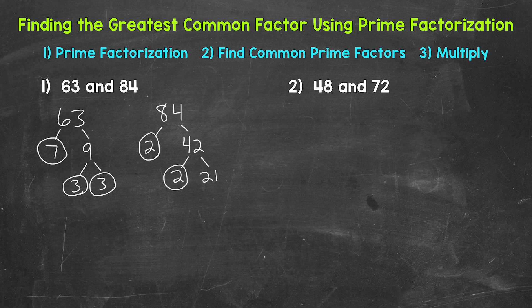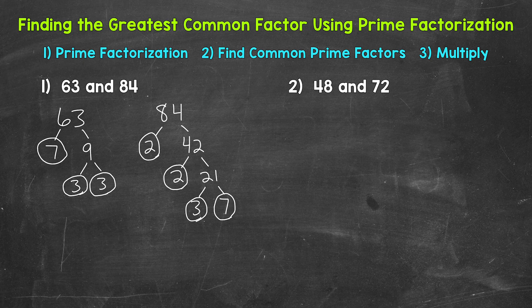2 is prime, so we are done there. 21 we can break down — 3 times 7 equals 21, so 3 and 7 are factors of 21. 3 is prime, and 7 is prime as well, so we are done. That's the prime factorization of 84. We can't break that down any further.